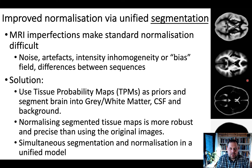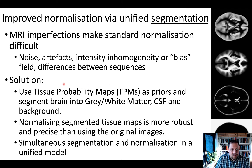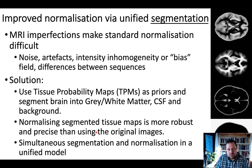Unified segmentation does a number of things. First, it performs bias correction for field inhomogeneities introduced within the scanner, reducing noise, artifacts, and intensity inhomogeneities. Then it uses tissue probability maps as priors in Bayesian statistics — assigning prior probabilities about which brain region belongs to which tissue class — and segments the brain into gray matter, white matter, cerebrospinal fluid, background, and two additional classes. Normalization takes place simultaneously, giving a more robust and precise alignment than methods used just five to ten years ago.